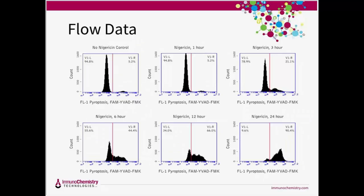ICT's caspase-1 inhibitor reagent, FAM-YVAD-FMK, was used to monitor the caspase-1 induction response in BMDM cells treated with nigericin for various periods of time. A common cell pool was spiked with FAM-YVAD-FMK and divided into separate treatment groups. Starting with 24-hour samples and working backwards, 10 micromolar nigericin was added and samples were incubated at 37 degrees. Following their respective treatment exposure periods, cells were washed and analyzed on a flow cytometer. The amount of caspase-1 activity detected directly correlated to the duration of exposure — the longer the cells were exposed to nigericin, the larger the proportion of caspase-1-positive cells found in the sample.